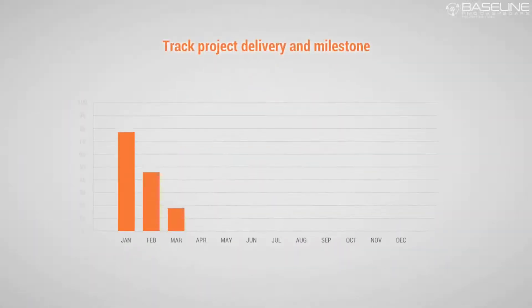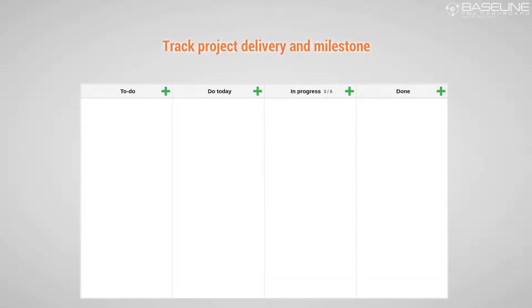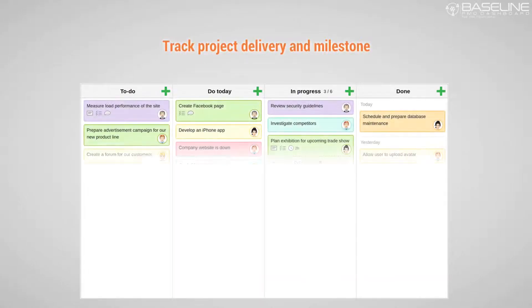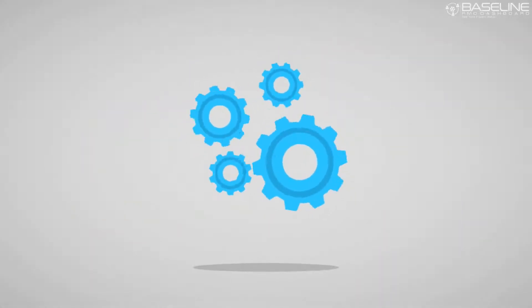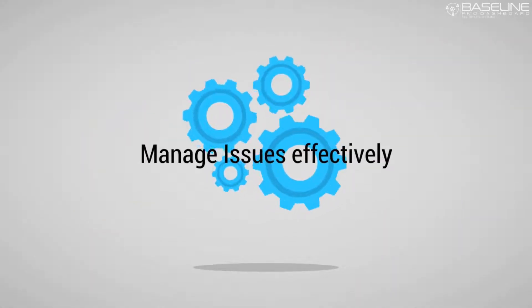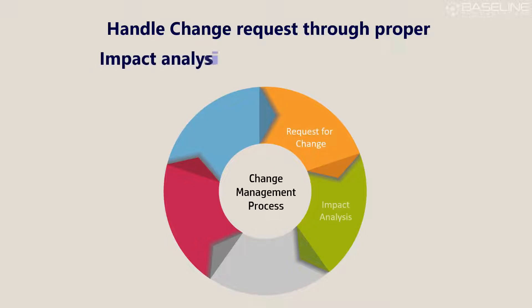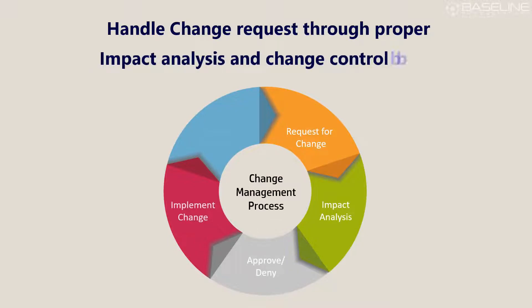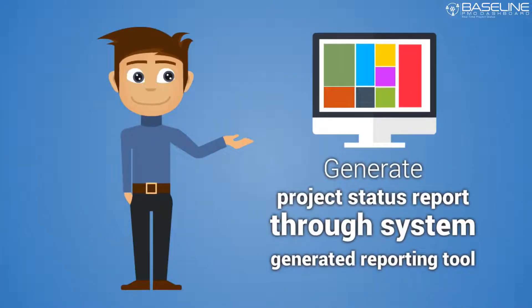Track project delivery and milestones through a user-friendly Kanban board. Handle risk with a risk scoring tool and exposure. Manage issues effectively with escalation programs. Handle change requests through proper impact analysis and change control board. And most importantly, generate project status through a system-generated reporting tool.